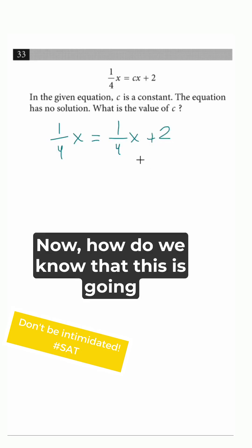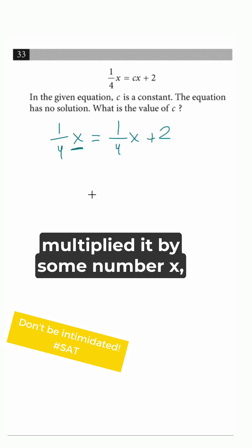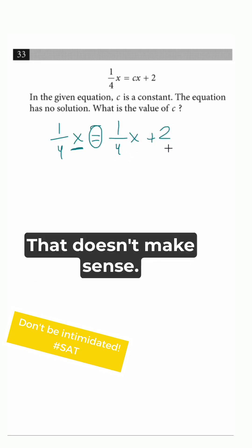Now, how do we know that this is going to give us no solution? Well, think about it. If we took 1 fourth and multiplied it by some number x, how could that equal multiplying that same number by 1 fourth, but then adding 2 to it? That doesn't make sense.